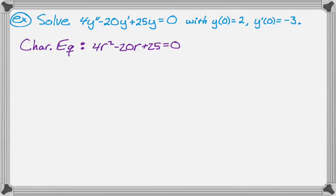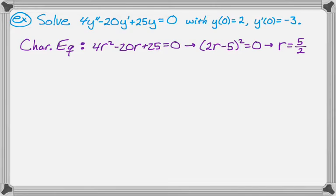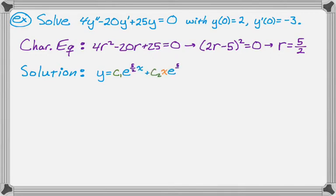This is actually a perfect square trinomial, so it factors as (2r minus 5) squared. That means r equals 5/2 is the only real zero — we have a repeated root. And that means our solution is going to look like y equals c₁ e to the rx plus c₂ x e to the rx. That's the general form of the solution. Where we want to go from here is figure out what c₁ and c₂ are.